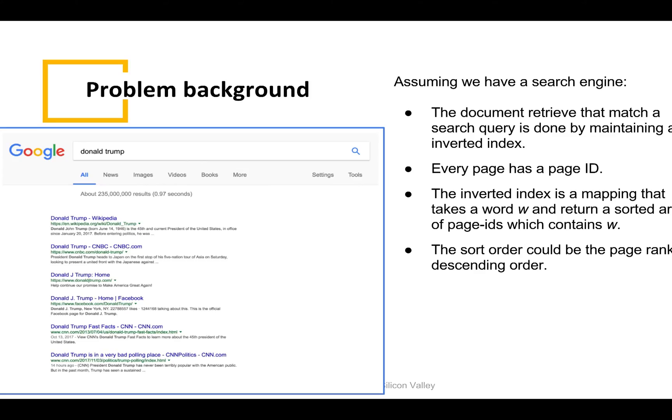Let me introduce one of the industrial use cases of this algorithm. A natural implementation for a search engine is to retrieve the most relevant documents that match the set of words in a search query. That is usually done by maintaining a so-called inverted index. For example, if we search Donald Trump in Google,